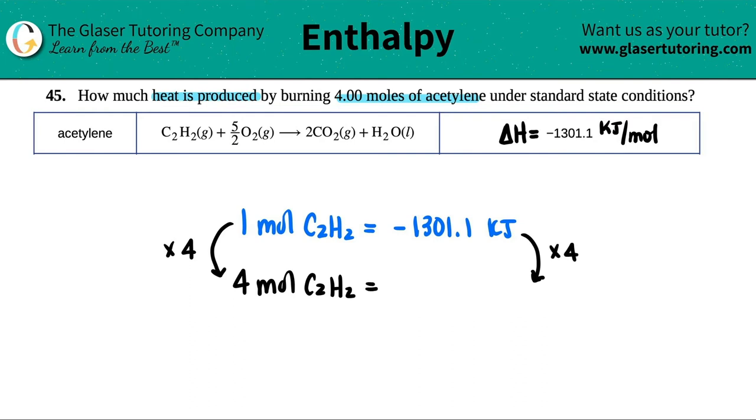So let's see. 1301.1 times four is 5204.4. 5204.4 kilojoules.